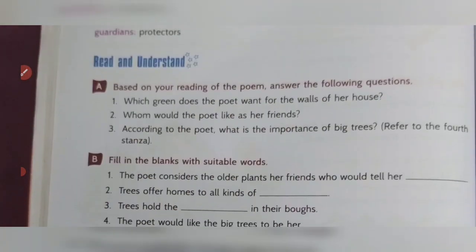Now see, 'Read and Understand' is given here — questions and answers. Come to question number A: Based on your reading of the poem, answer the following questions. The first question is: Which green color does the poet want for the walls of her house?